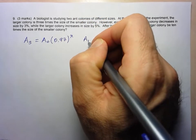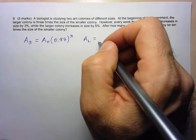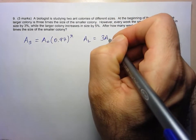And then for the larger colony which I'll call AL. Well, the initial value, again, I don't know what it is. But I do know that it has to be three times the initial value of the other population.